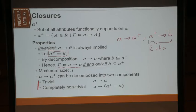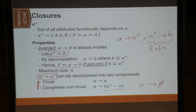Assuming that A to A+ is non-trivial, you can always decompose things into two components: one is the trivial part, and the other is the completely non-trivial part. We will use this probably next week when we talk about normal forms.